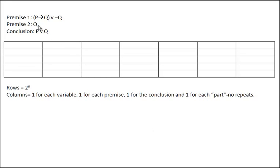The following is an example of a two-variable truth table. The argument we have here consists of two premises and a conclusion. Every argument has at least one premise and at maximum one conclusion. In this case, premise one is 'if p then q or not q,' premise two is q, and the conclusion is p or q.